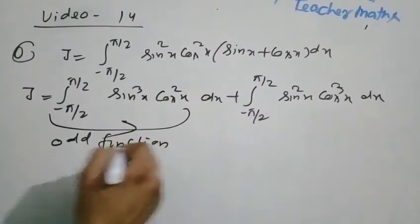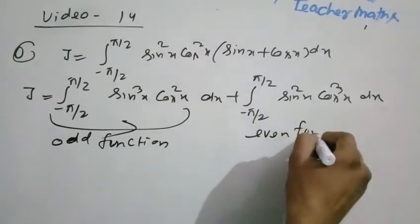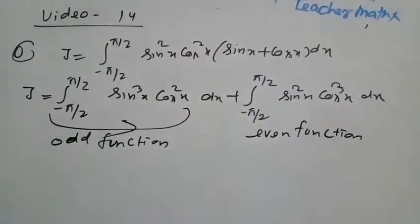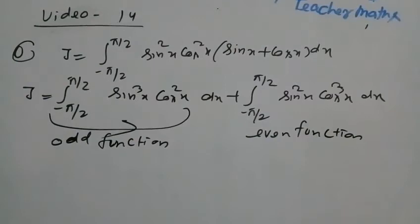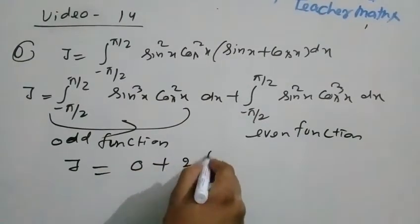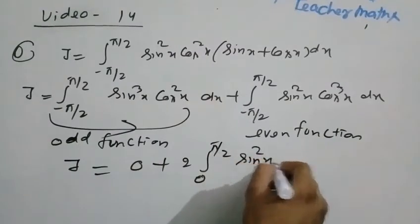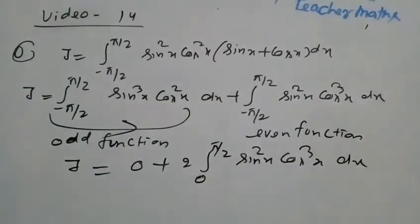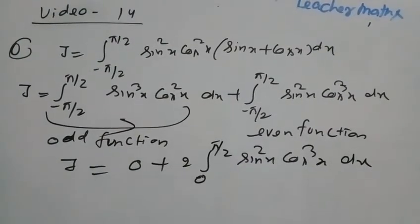The first part is an odd function. The integration of an odd function equals zero. Since sin(minus theta) equals minus sin theta, the sin cube x cos squared x term is odd. And since cos(minus theta) equals cos theta, the second term is even. So I equals 0 plus 2 times the integral from 0 to pi by 2 of sin squared x cos cube x dx.